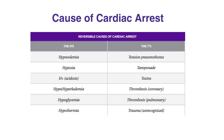The H's include hypovolemia, hypoxia, H-plus acidosis, hypo- and hyperkalemia, hypoglycemia, and hypothermia. The T's include tension pneumothorax, tamponade, toxins, coronary thrombosis, pulmonary thrombosis, and unrecognized trauma.